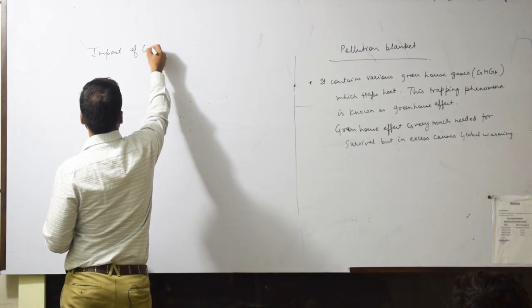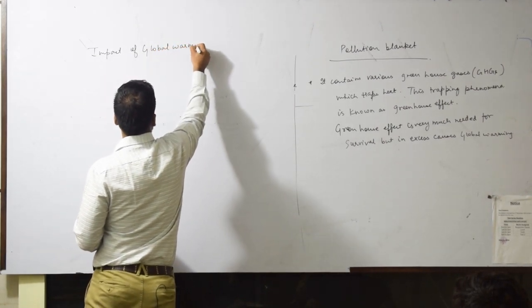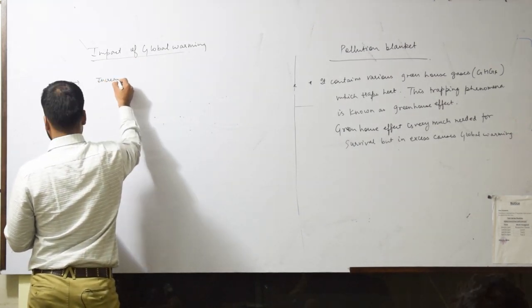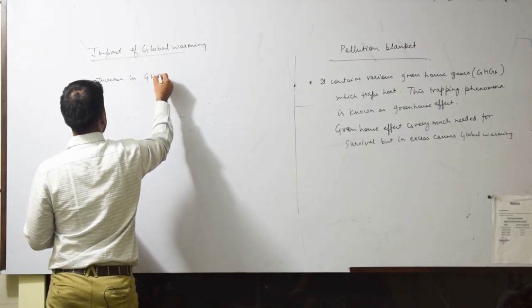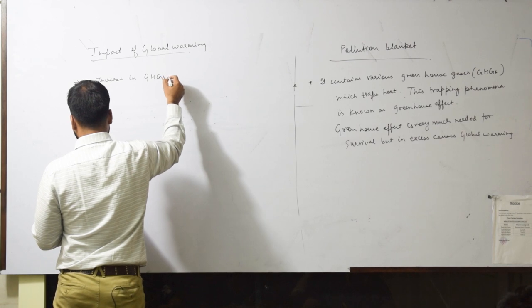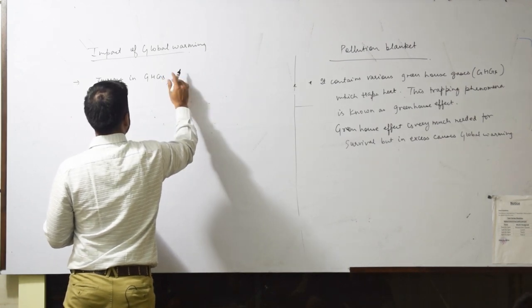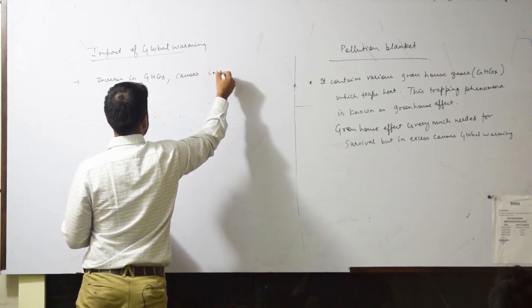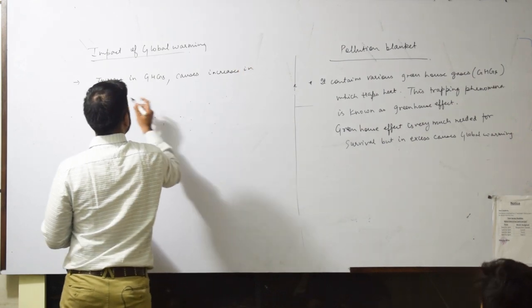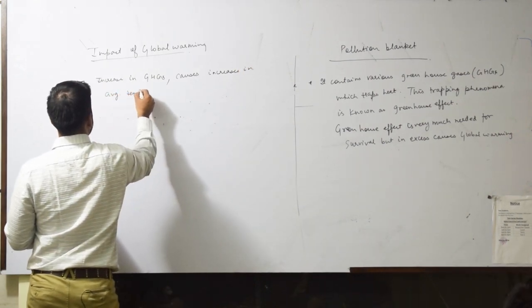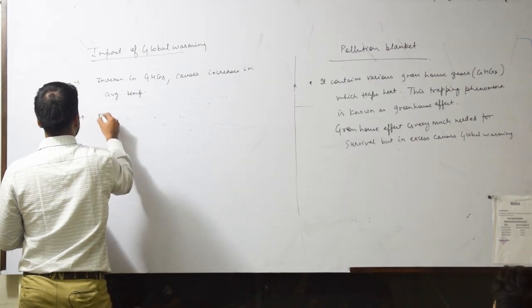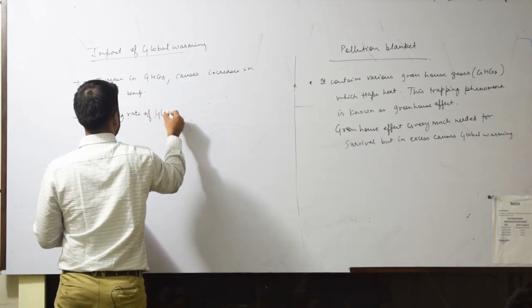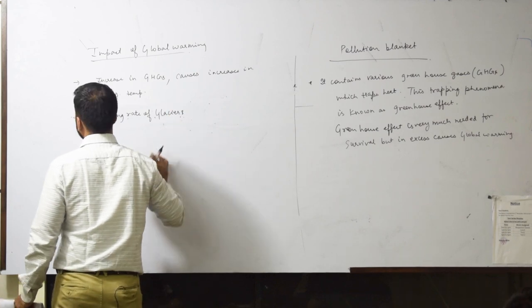So in global warming, our impact is very high. Let's look at the impact. Impact of global warming. The first point is that increase in greenhouse gases causes increase in average temperature. Next point is melting rate of glaciers. Melting rate of glaciers increases.